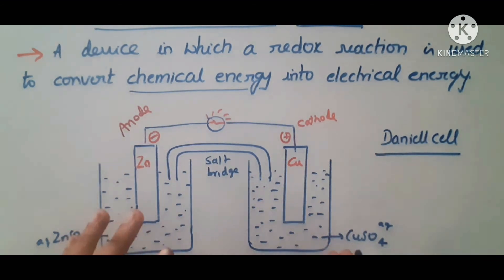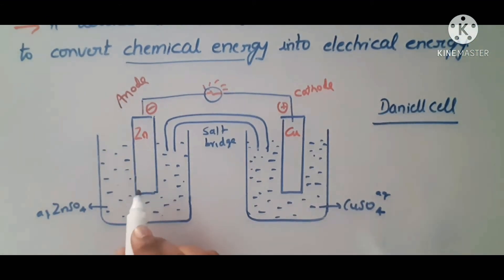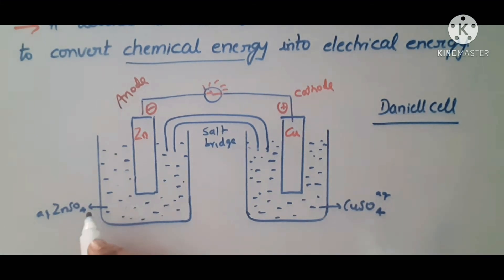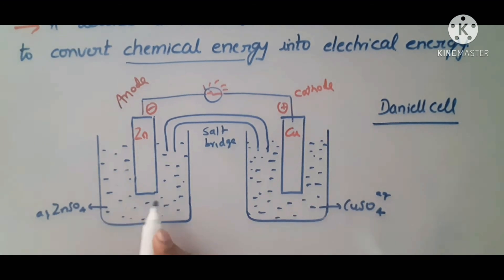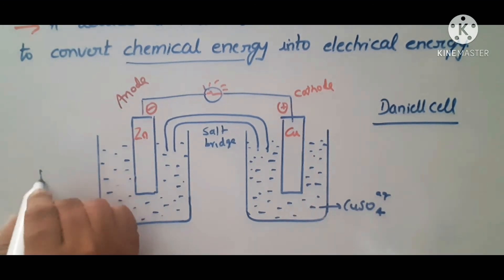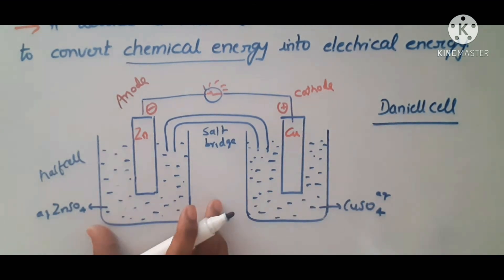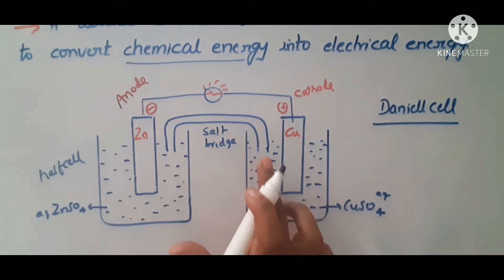For the working of the Daniel cell, we take a zinc metal plate dipped in an aqueous solution of zinc sulfate — this is the electrolyte. Then we have a copper electrode dipped in a copper sulfate solution. Each of these constitutes a half cell, and the two half cells are connected by a salt bridge.